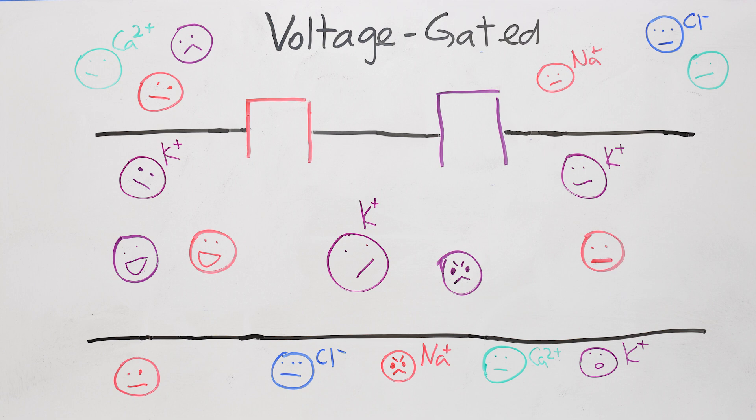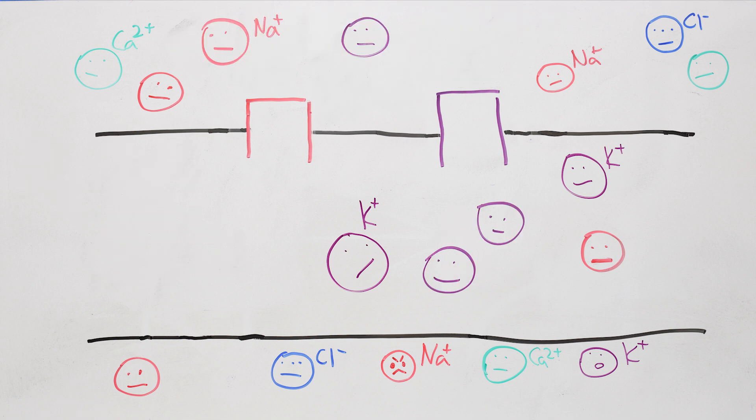So let's see how voltage-gated sodium and potassium channels work together to make a spike. Let's start out with everything at rest. Ion channels are closed, the voltage is at resting potential, and all the ions are on the appropriate sides of the cell membrane.